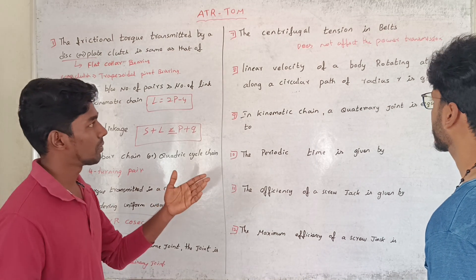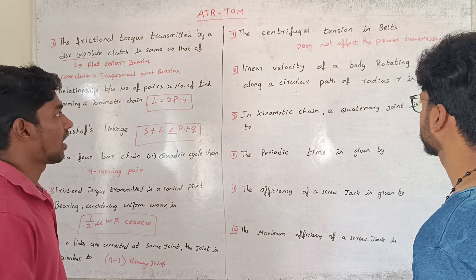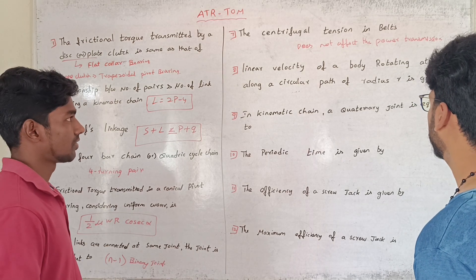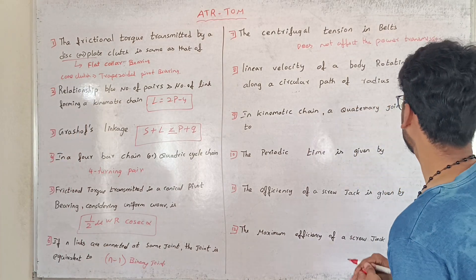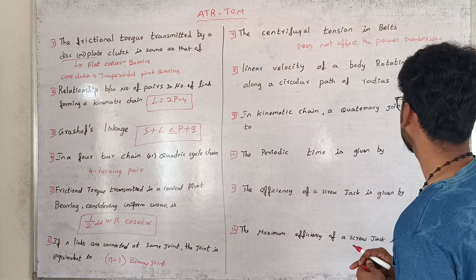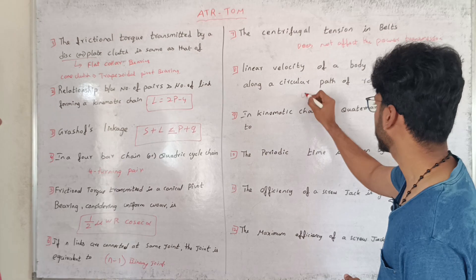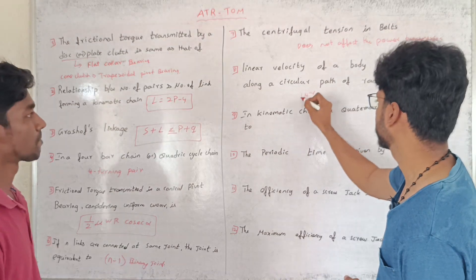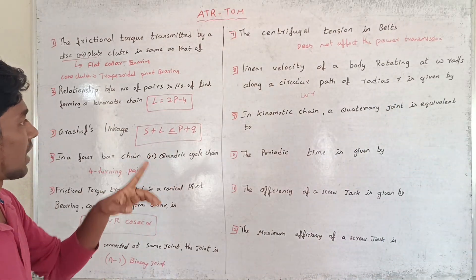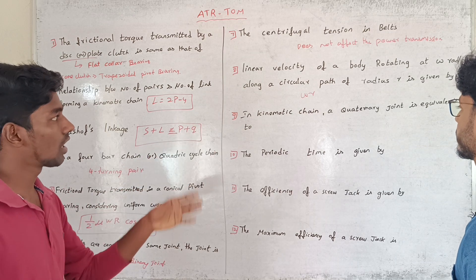The linear velocity of a body rotating at omega along a circular path of radius r is given by v equals r times omega.